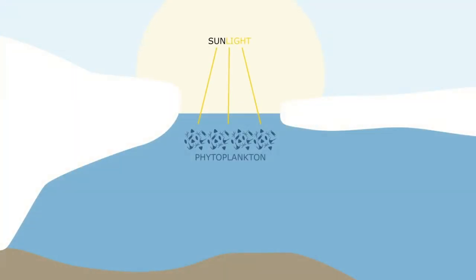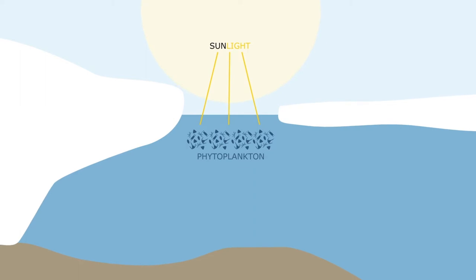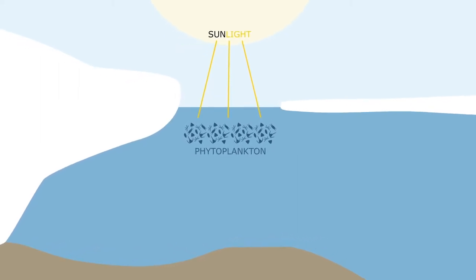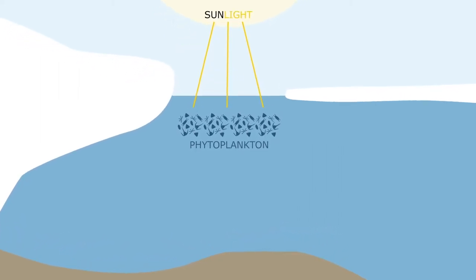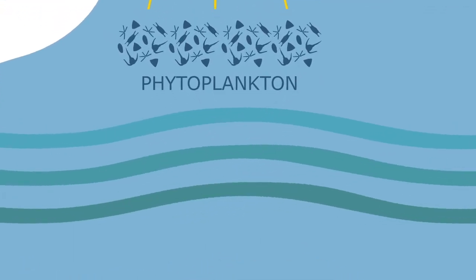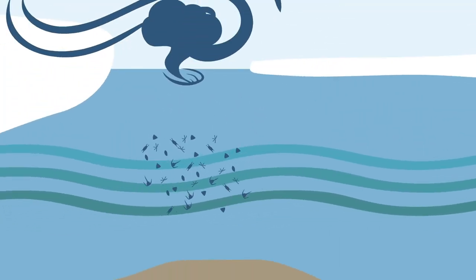How rich an oasis a polynia may be depends on the physical forces that shape its environment. As spring proceeds, ice melts away and the fresh, buoyant meltwater helps to keep the phytoplankton in the well-lit surface waters. But this process can be disrupted by other forces, such as ocean currents, strong winds and motions of pack ice and icebergs.